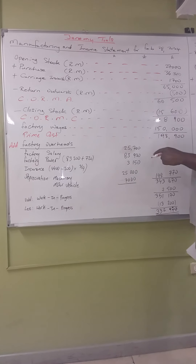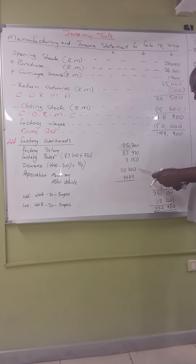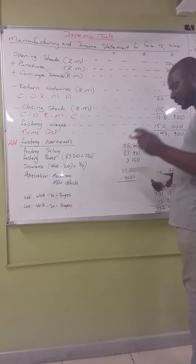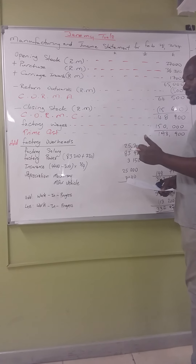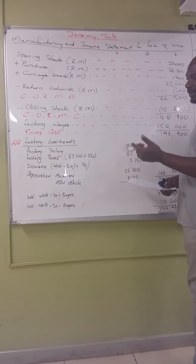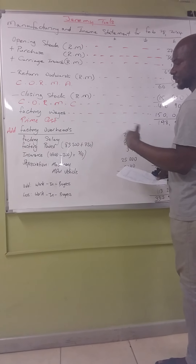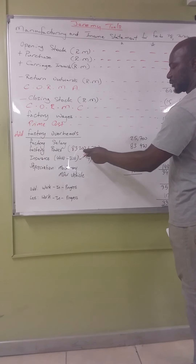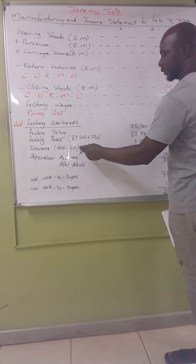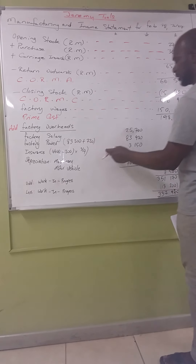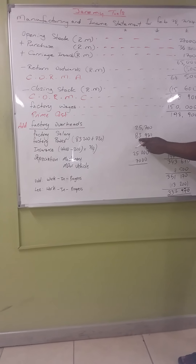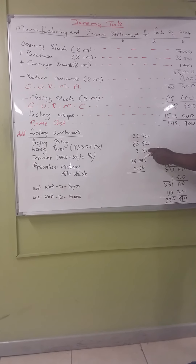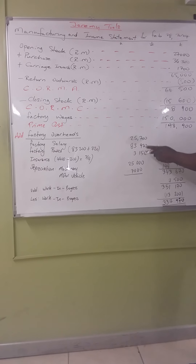Looking at note 3 regarding insurance, the insurance should be shared in the ratio of three to one — three times as much goes to the factory. Three plus one gives four, so three-fourths belongs to the factory. 4,200 multiplied by three-fourths gives 3,150 for the factory. The remaining one-fourth goes to the office.